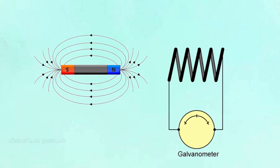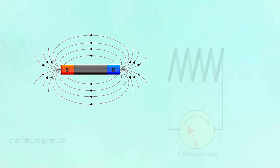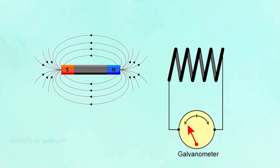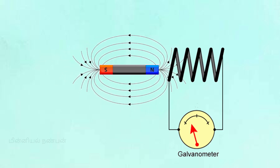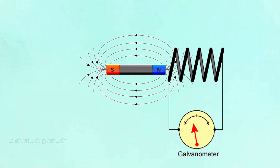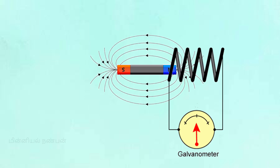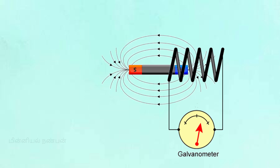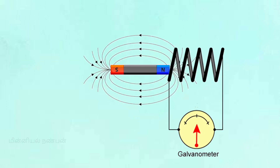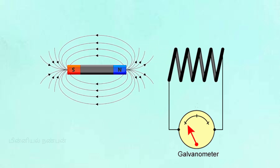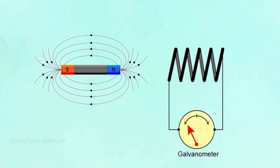As the magnet moves relative to the coil, the magnetic flux through the coil changes continuously. When we increase or decrease the magnetic field by moving the magnet, the EMF is induced. This demonstrates that any change in magnetic flux — whether increasing or decreasing — will induce an EMF in the coil.